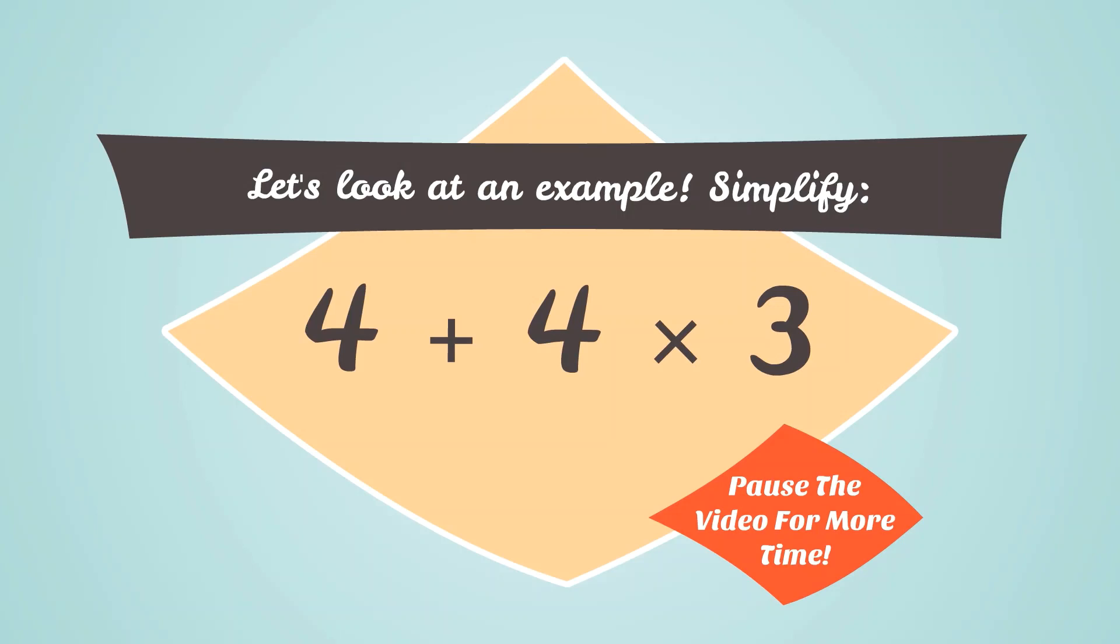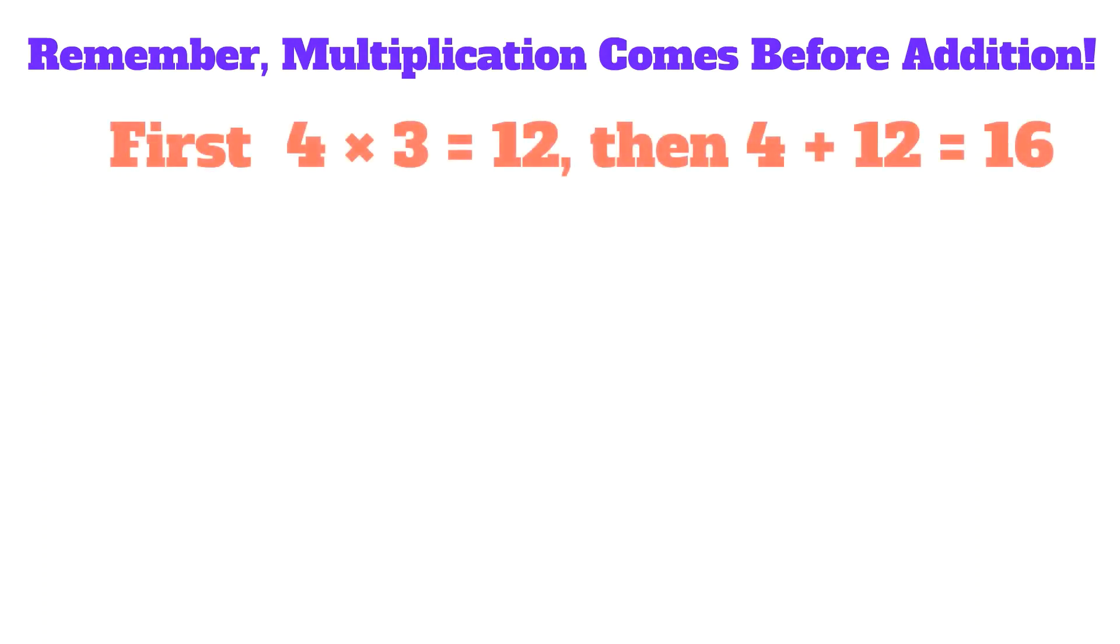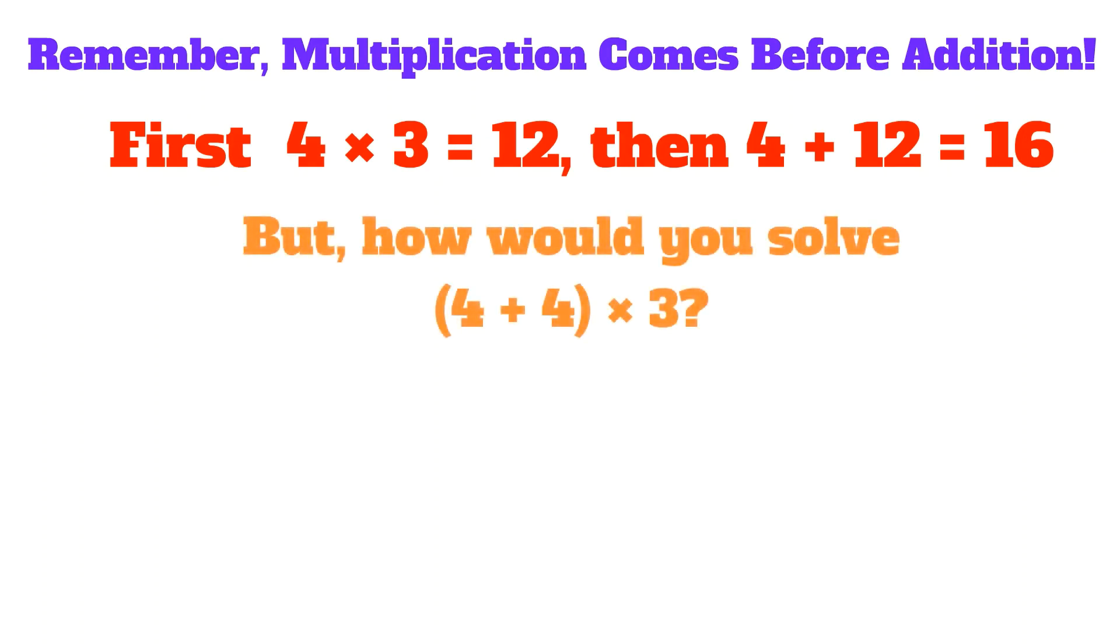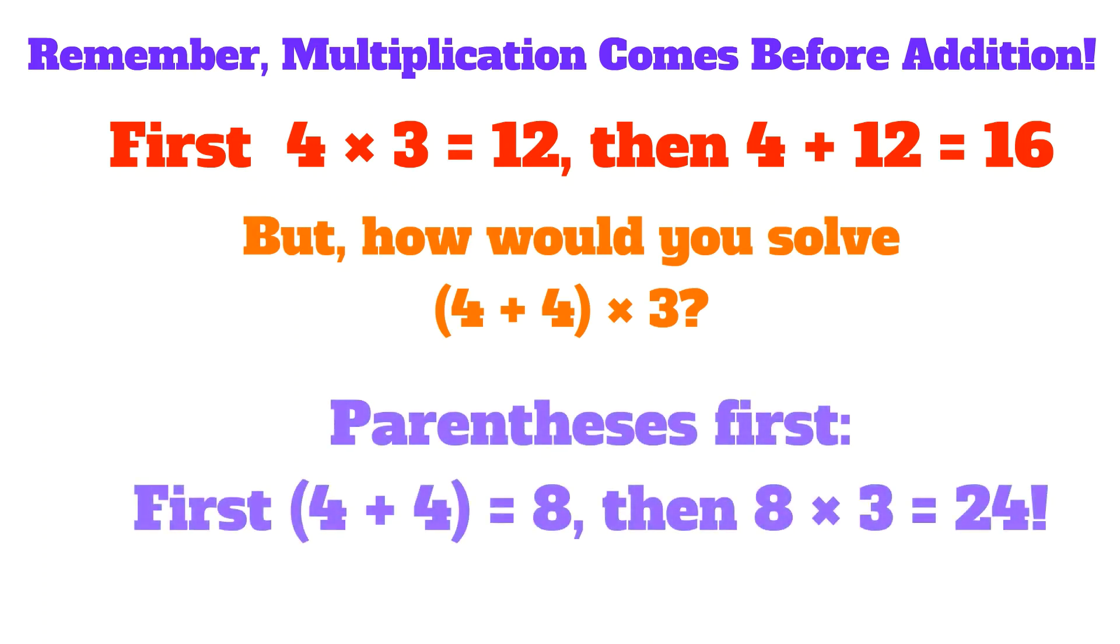Let's look at an example. Simplify 4 plus 4 times 3. Pause the video for more time to solve this problem on your own. Remember, multiplication comes before addition. First, we do 4 times 3, which gives us 12, and then 4 plus 12, which gives us 16. But how would you solve 4 plus 4 times 3, where the 4 plus 4 is in parentheses? So we do the parentheses first, which gives us 4 plus 4, which is equal to 8. And then 8 times 3, which gives us our answer of 24.